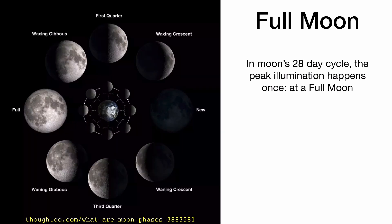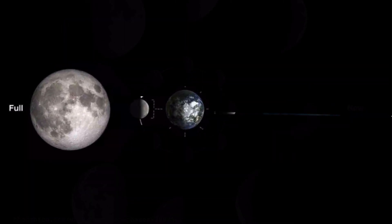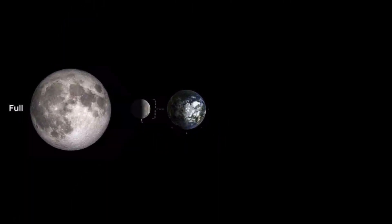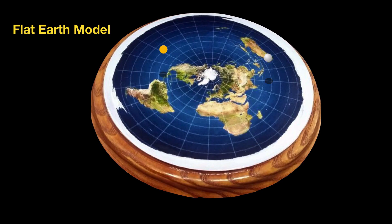Now let's repeat all of that with the full moon — the geometry is a little different. In the globe Earth model, the sun is clearly on the right-hand side, the sun rays are coming in, and what we see from Earth is a fully illuminated moon. It's a 180-degree angle — the moon is away from the sun.